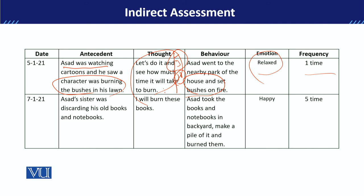Similarly, if we take a second example — Asad's sister had some old books and notebooks. The thought did not come just once, but came multiple times. So when it came multiple times, we need the frequency. You can ask the child to report how many times that thought came into their mind. Asad then picked up those books and notebooks, went to the backyard, and burned them.